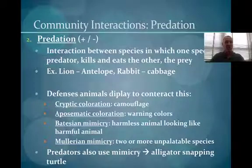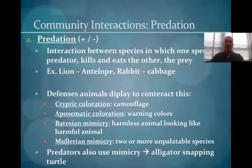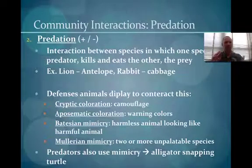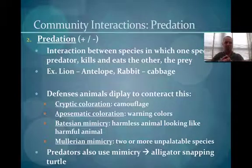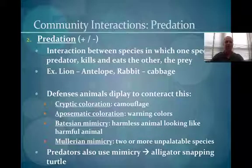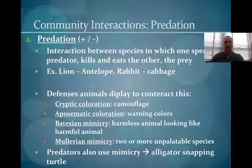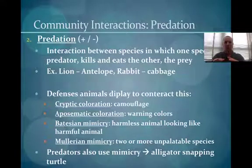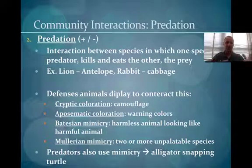Next is predation. Predation benefits the predator and is negative to the prey. We often think of the lion-antelope example, but realize that a rabbit and a cabbage — the rabbit would be the predator, the cabbage would be the prey. Animals have developed different mechanisms, or displays, to counteract the predator-prey relationship. One is called cryptic coloration, which is camouflage — animals can hide to avoid being eaten. Some predators use this as well.